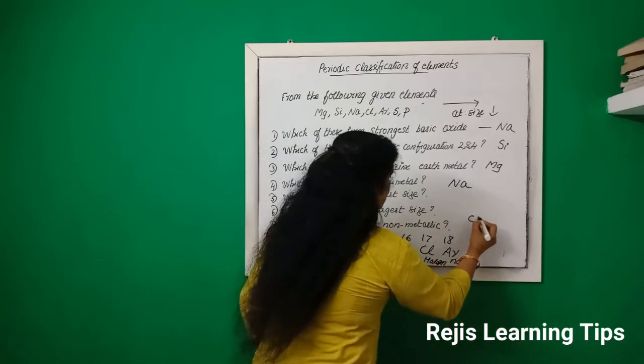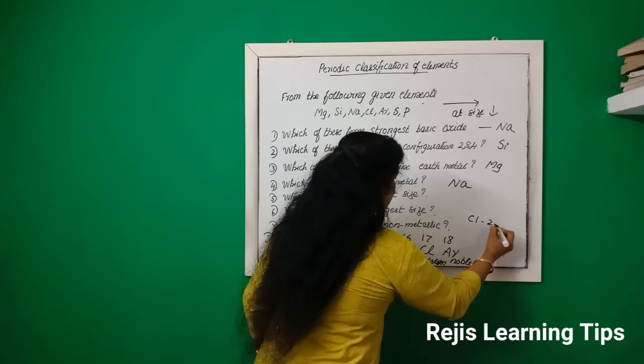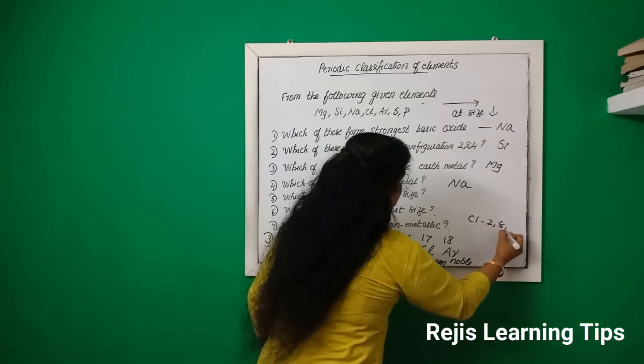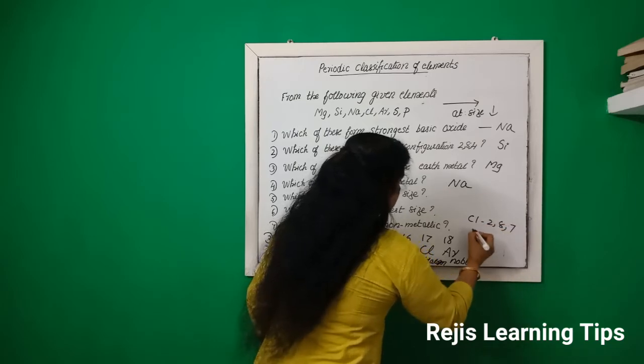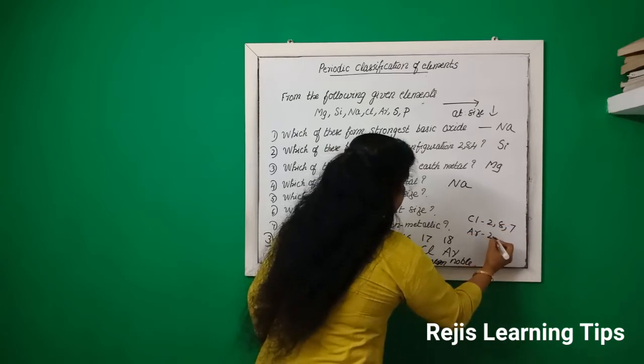Chlorine has electronic configuration 2,8,7, and argon has configuration 2,8,8.